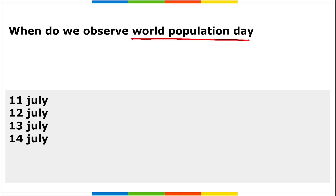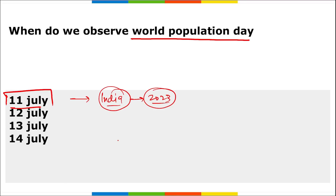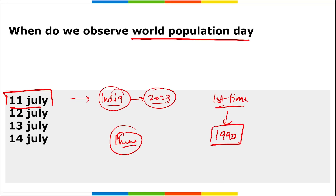World Population Day is observed globally on 11th July, to focus attention on the urgency and importance of population issues. India became the world's most populated country in 2023 by surpassing China. The theme for 2023 is: 'Unleashing the power of gender equality: Uplifting the voices of women and girls to unlock our world's infinite possibilities.' World Population Day was first observed in 1990.